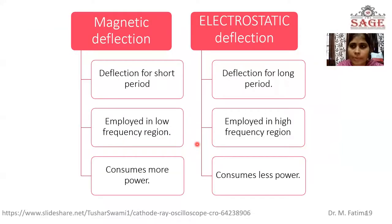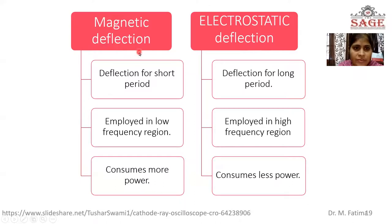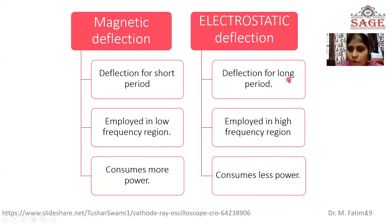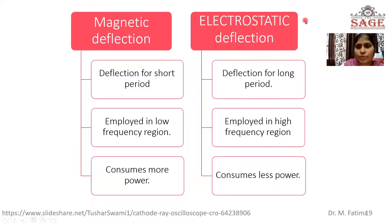There are two types of deflection systems: magnetic deflection system and electrostatic deflection system. In magnetic deflection, the deflection is done for a very short period of time; it is employed in low frequency regions but consumes more power. In electrostatic deflection, the electron beam is deflected for a longer period; it is employed in high frequency regions and consumes less power. So electrostatic deflection is used in the CRT.